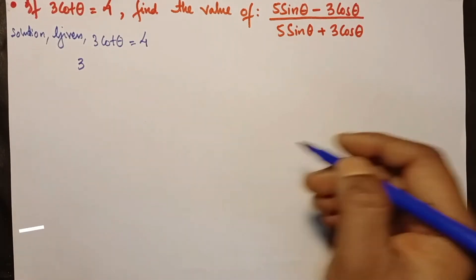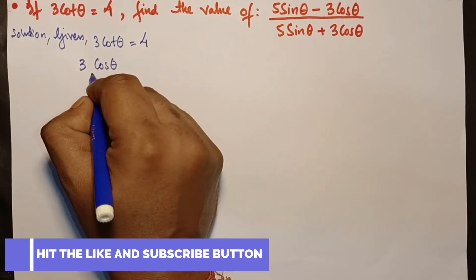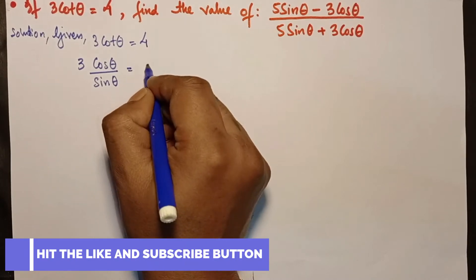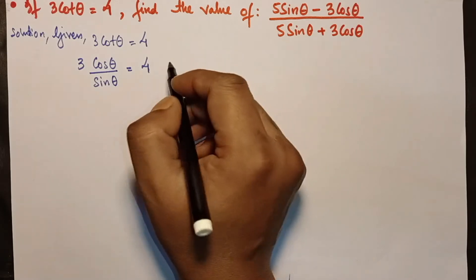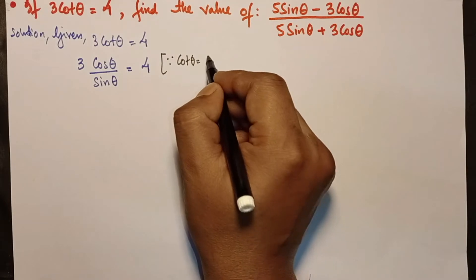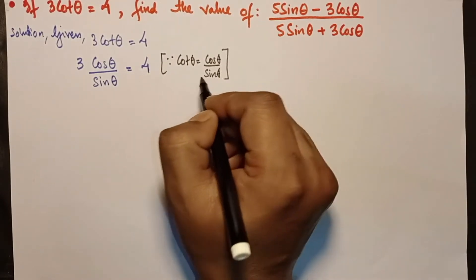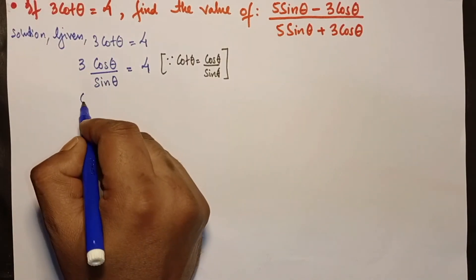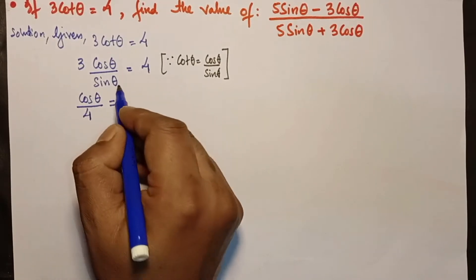We know the formula: cotθ = cosθ/sinθ. You have to know all these formulas — without knowing them you cannot proceed. Since cotθ = cosθ/sinθ, which is the reciprocal of tanθ, we can rearrange: cosθ goes to the numerator position with 4, and sinθ goes down with 3.